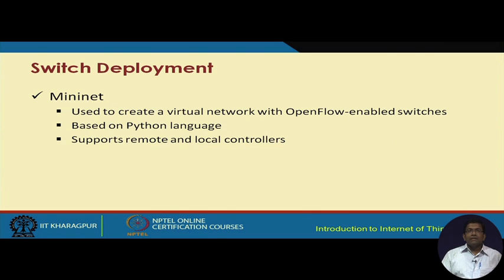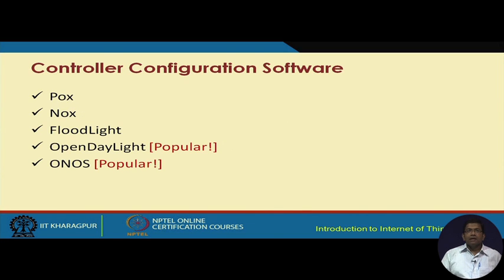For switch deployment, the Mininet software — which is also an emulator — is very useful. It is used to create a virtual network with OpenFlow-enabled switches, runs on Python, and supports both remote and local controllers. Controller configuration software includes POX, NOX, Floodlight, OpenDaylight, and ONOS. Particularly, OpenDaylight and ONOS are the most popular ones used for controller configuration.